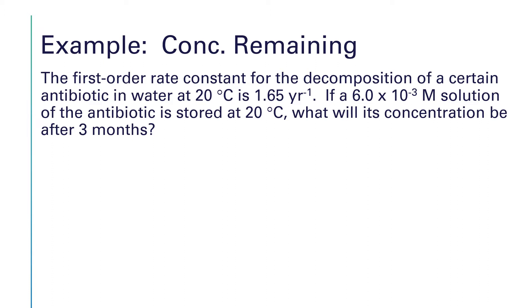It says the first order rate constant for the decomposition of a certain antibiotic in water at 20 degrees C is 1.65 per year. If a 6.0 times 10 to the minus third molar solution of the antibiotic is stored at 20 degrees C, what will its concentration be after three months?